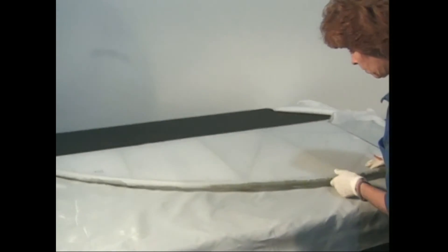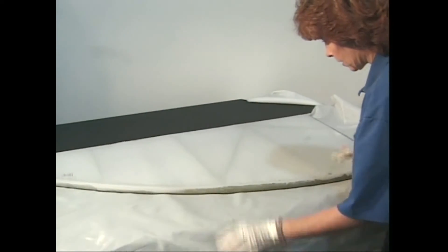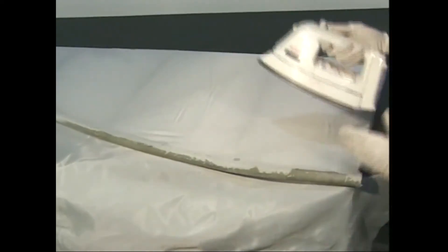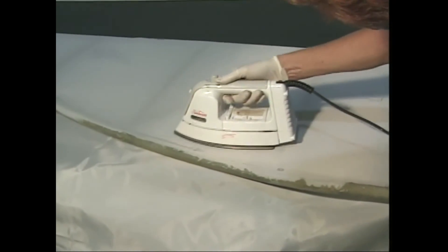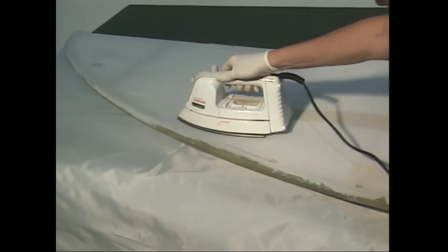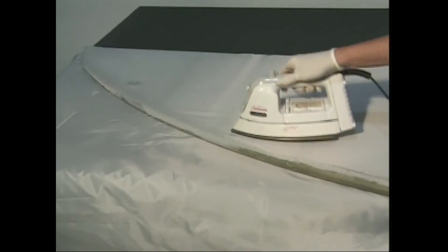Turn the stabilizer over so the covered side is up. Before proceeding, do a little shrinking on this side at 250 degrees to create a firmer surface on which to cement the one inch seam. It is a lot easier to make a neat seam if the fabric you're cementing to is flat and firm.